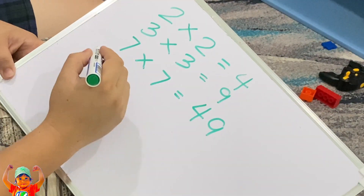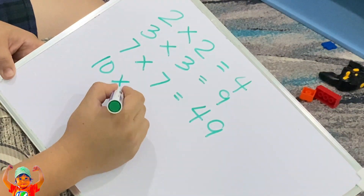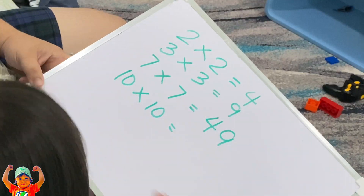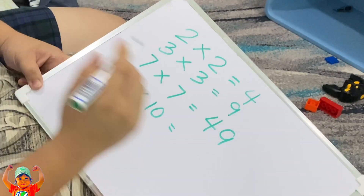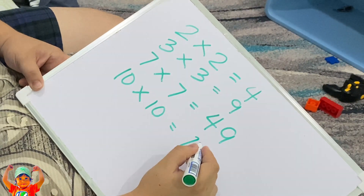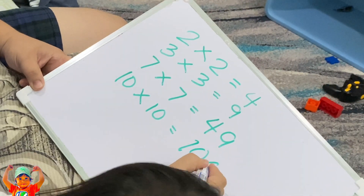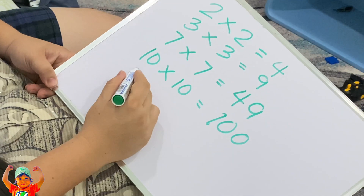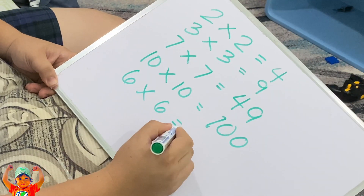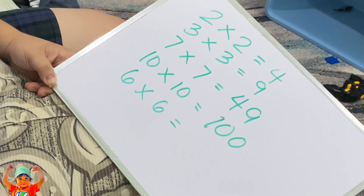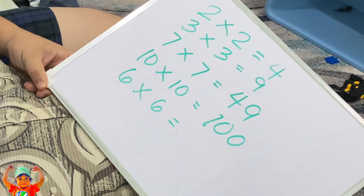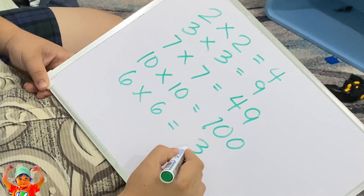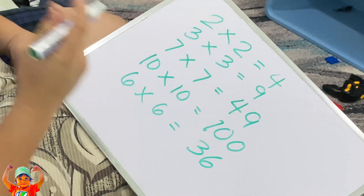Ten times... One hundred. Ten. One hundred! One hundred? Yeah. How about six times six? Thirty-six. Thirty-six. Thirty-six? Yes.